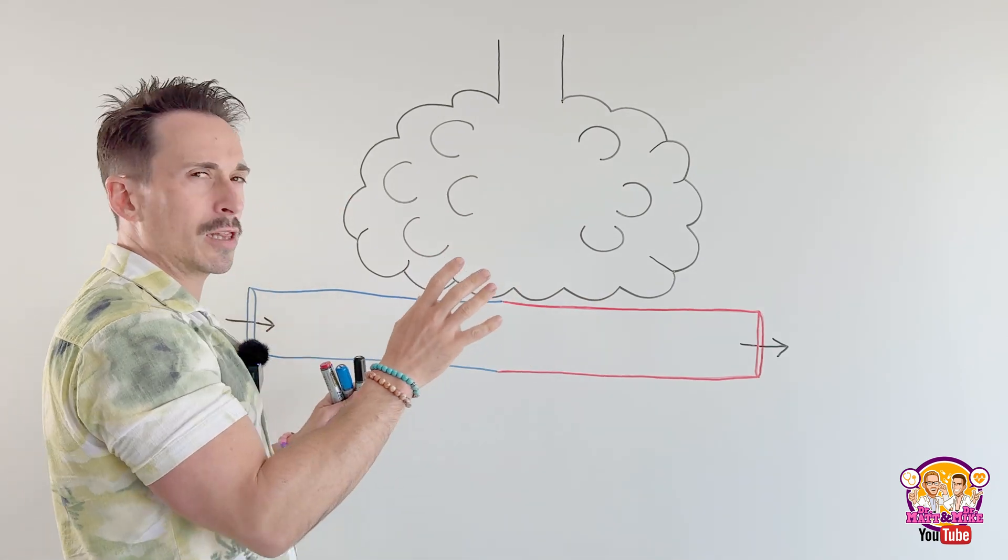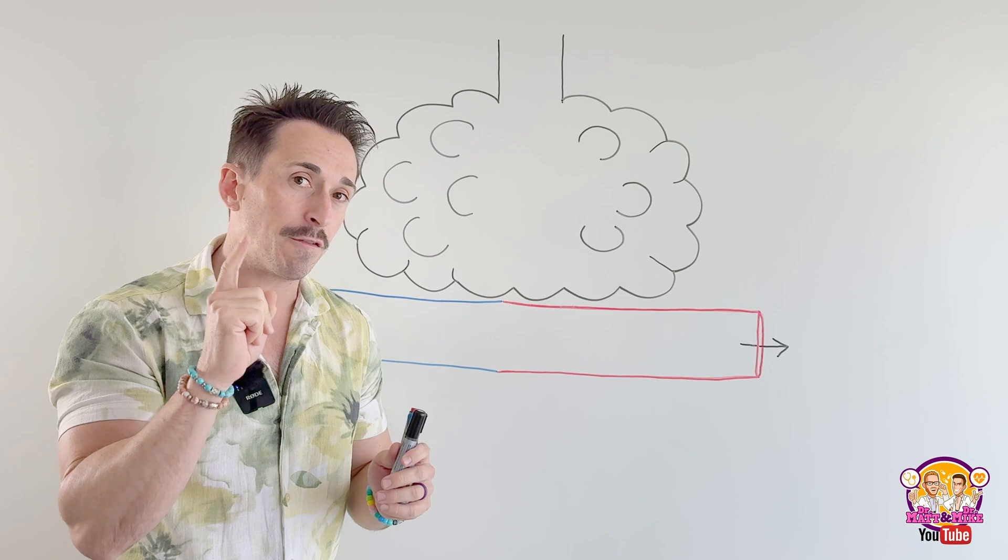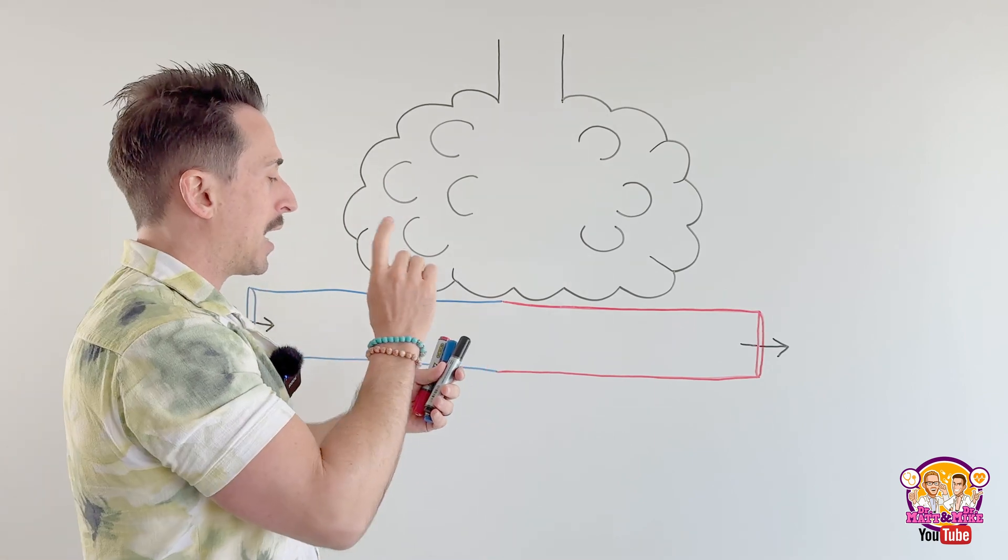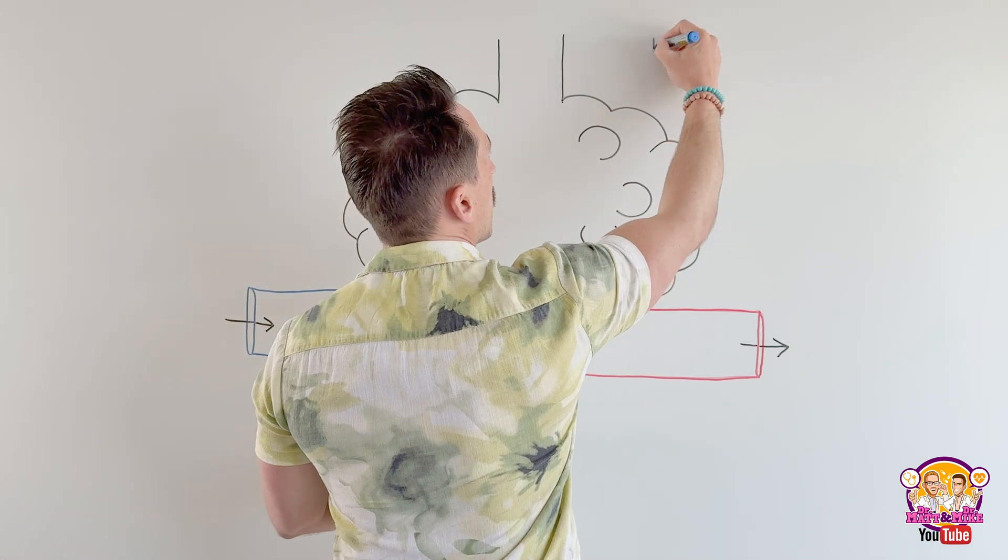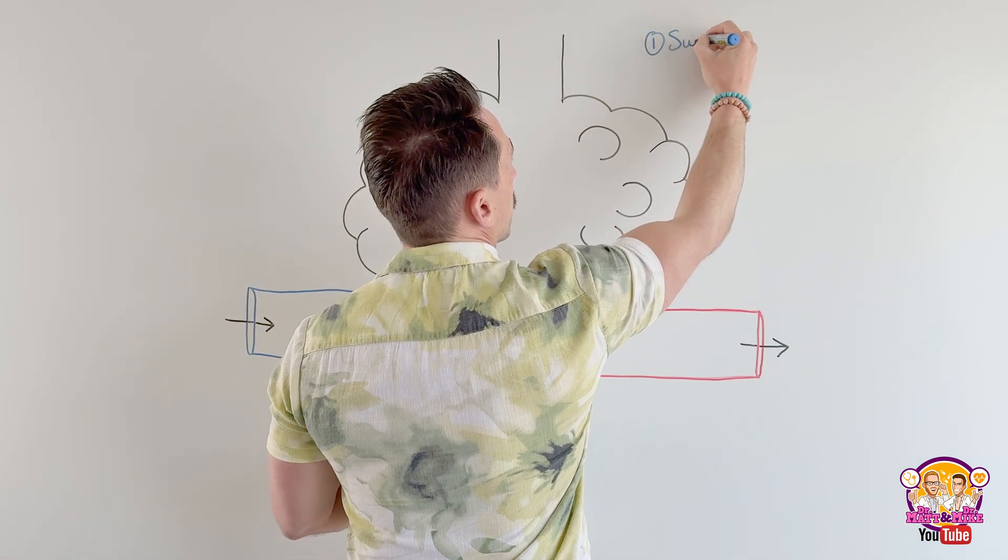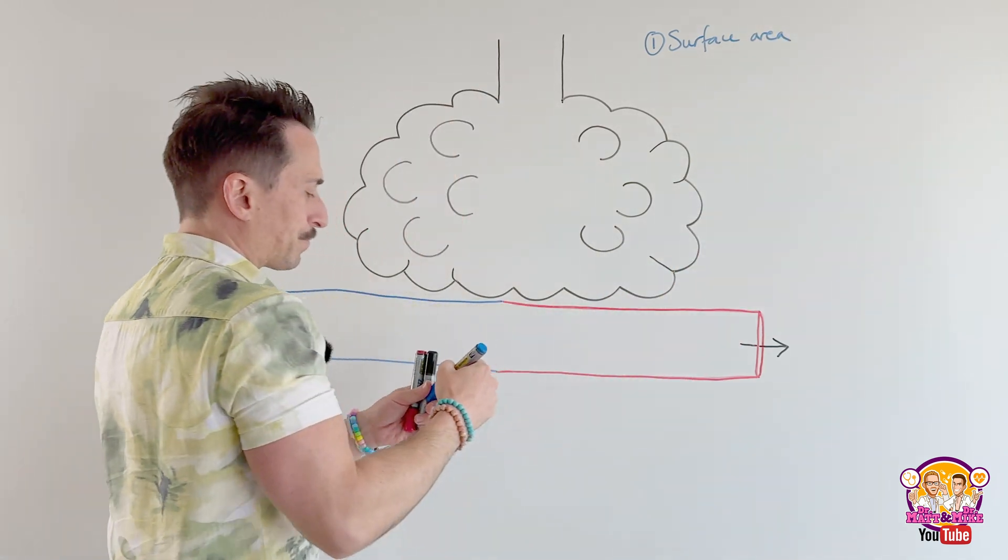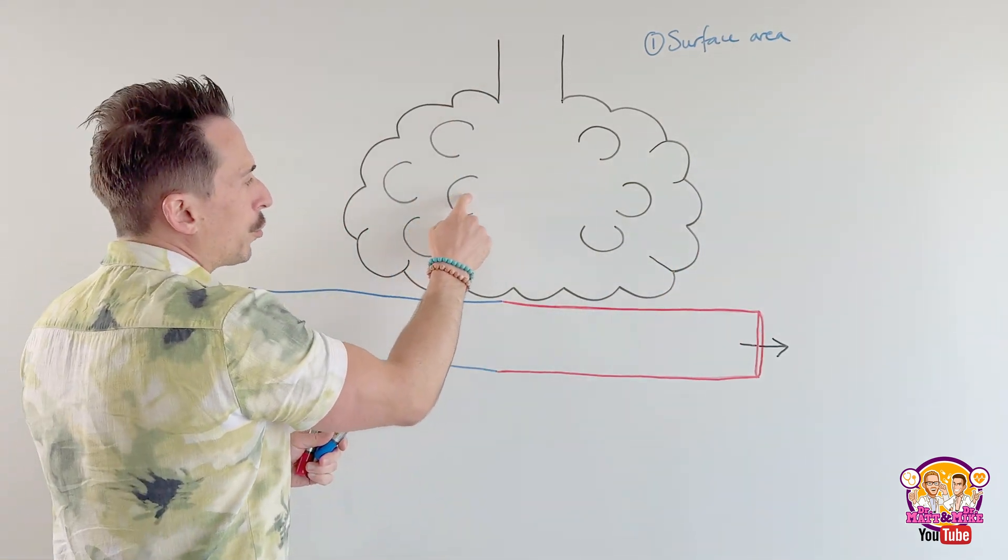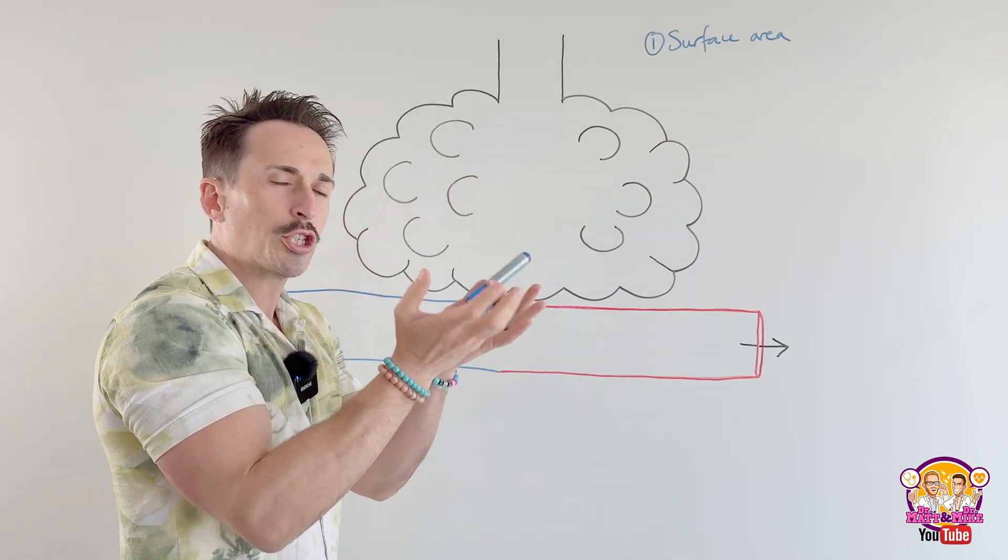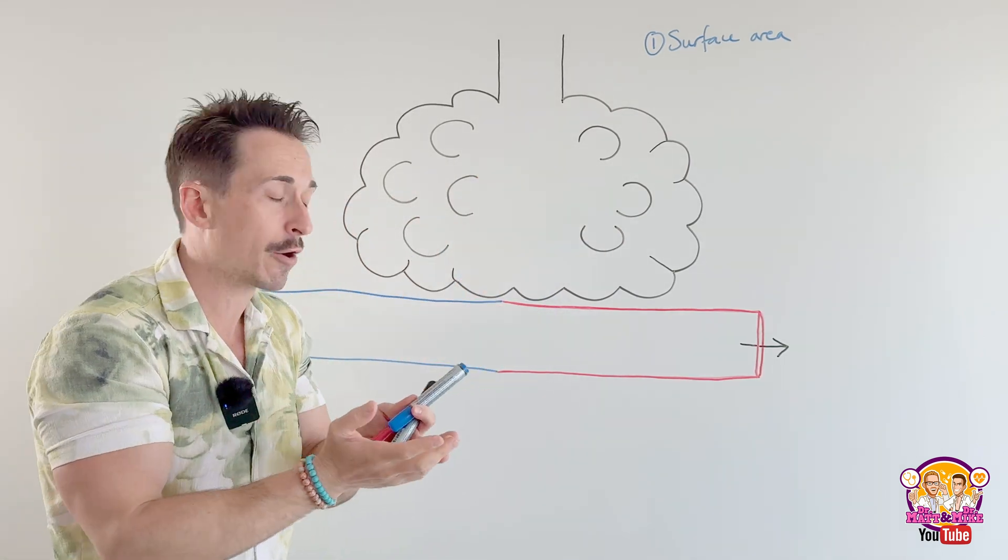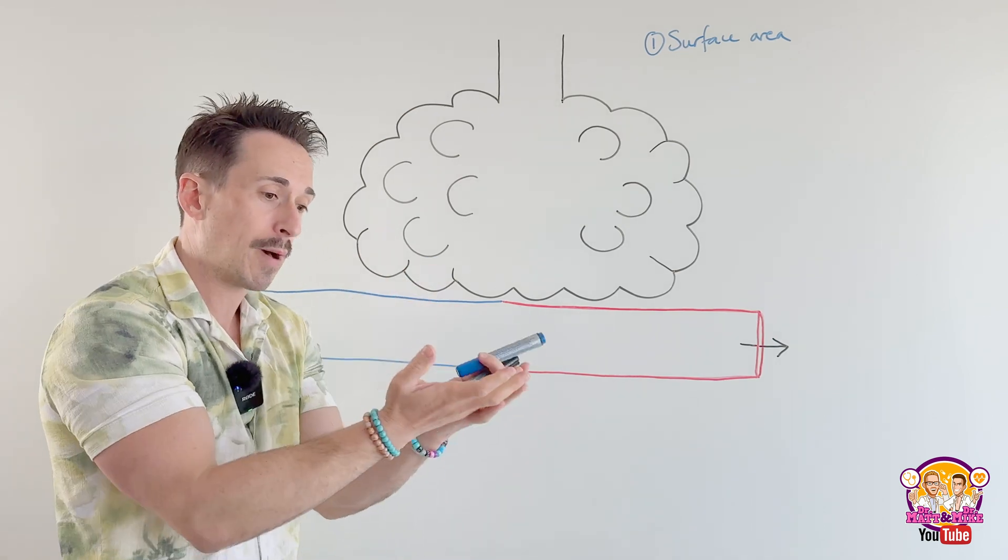We've got that set, and I alluded to actually the first of the four factors that can affect gas exchange. It is surface area. So number one that we're going to focus on is surface area. I said that because all the alveoli, 300 to 350 million of them, are little ball-shaped structures, it gives them a large surface area.